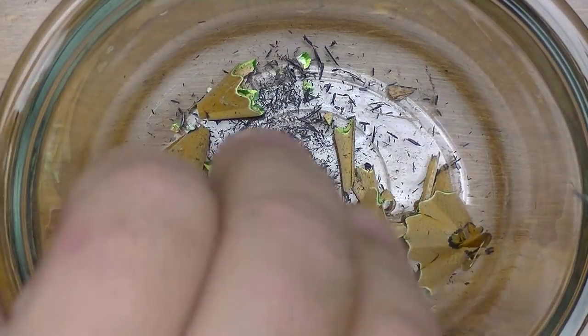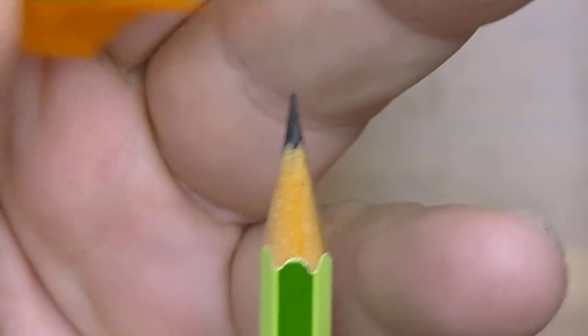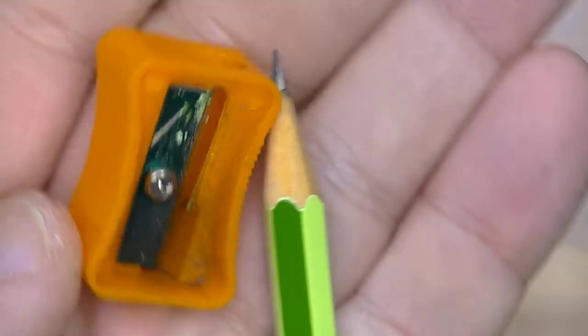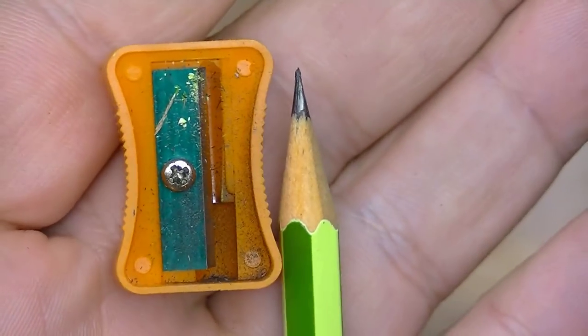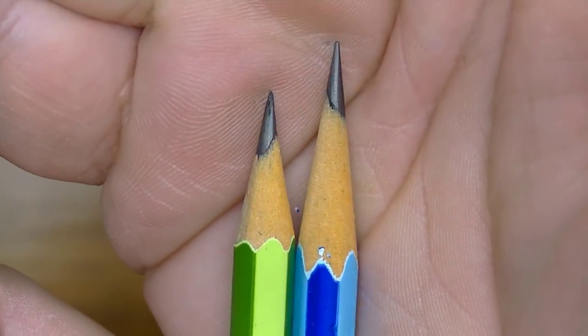There we go. Now this point here that you see here, that's done with the Camlin sharpener. And here is the pencil sharpened with the Mitsubishi KH20.